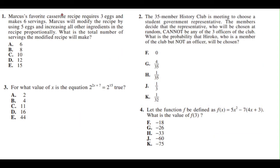Problem 1: Marcus' favorite casserole recipe requires 3 eggs and makes 6 servings. Marcus will modify the recipe by using 5 eggs and increasing all other ingredients in the recipe proportionally. What is the total number of servings the modified recipe will make? What we have to do here is create a proportion of eggs to servings.